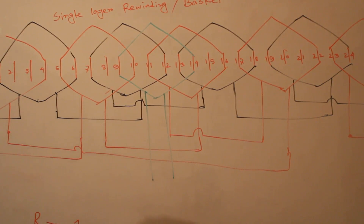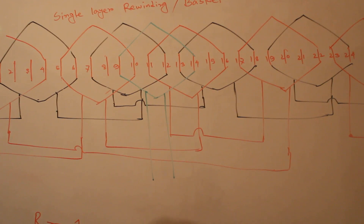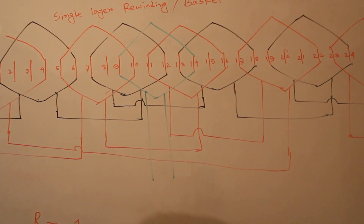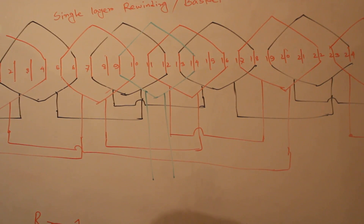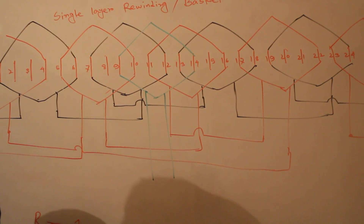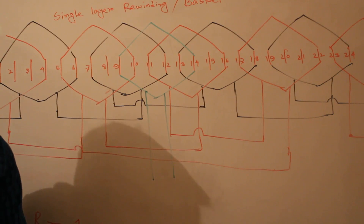This coil turn may differ from the old coil turn, because this is a rewinding or repair job. So first, when you open a damaged or burned motor, get the data from the old or burned coil — the number of turns and wire size — and use that data to apply for the new rewinding.